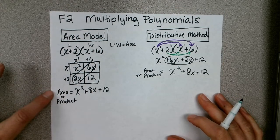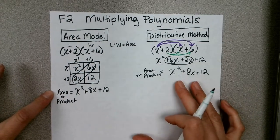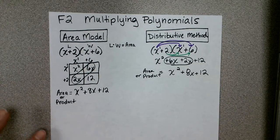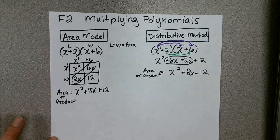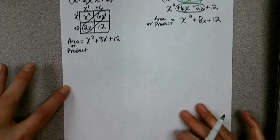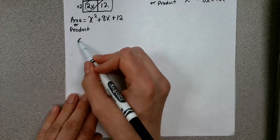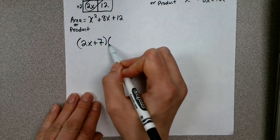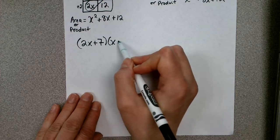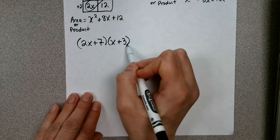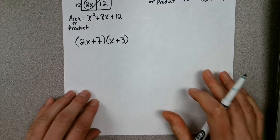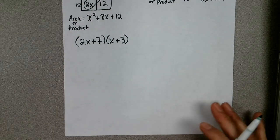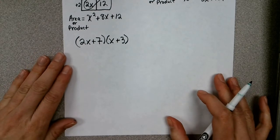Now I'm going to give you one to try on your own. Let's do 2x plus 7 times x plus 3. I'd like for you to try both the area model and the distributive property. Go ahead and pause the video and give that a try.